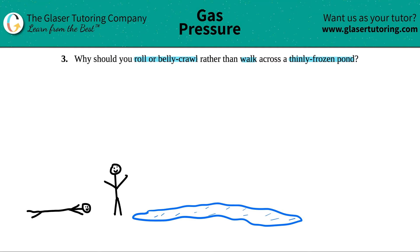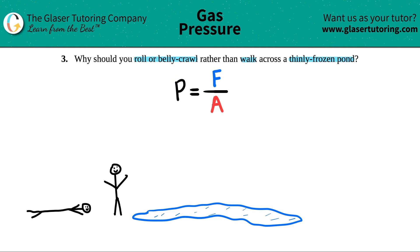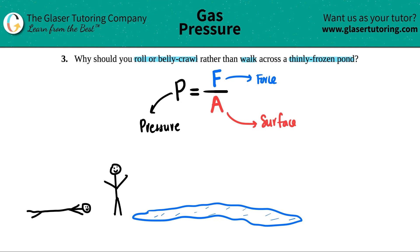This idea comes down to pressure. The one formula we're going to use to answer this question is: pressure equals force over area. P stands for pressure, and pressure is always equal to the amount of force over a certain surface area.